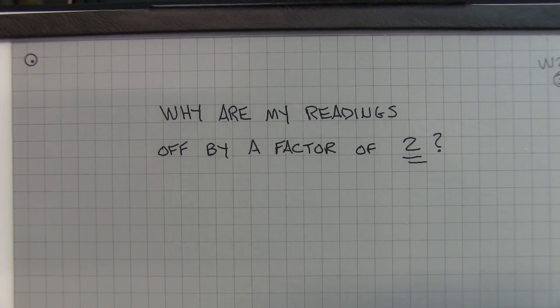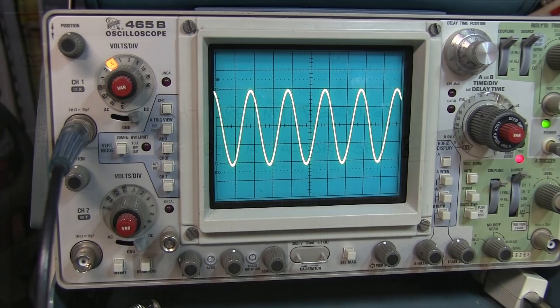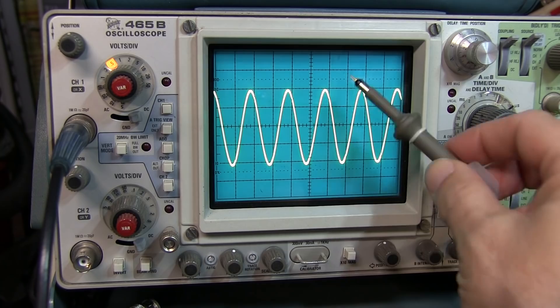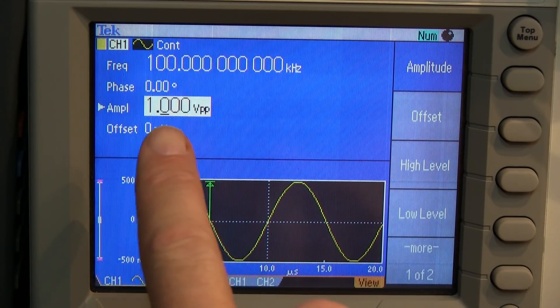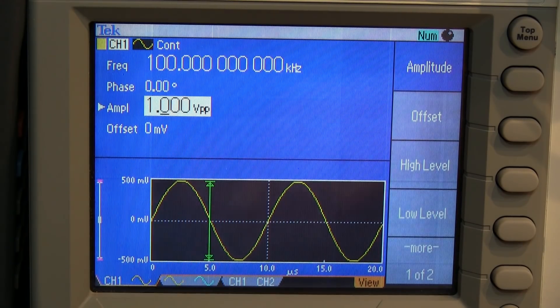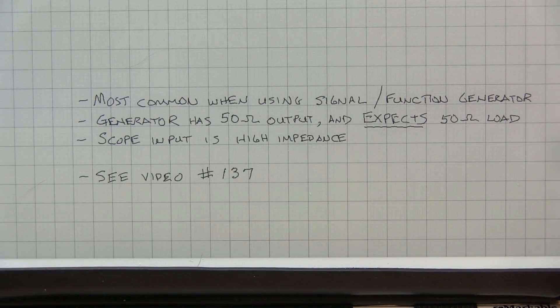Now, why are my readings off by just a factor of 2? Now, in this case, I'm seeing a 2 volt peak to peak signal on my scope, but I've set my brand new signal generator to 1 volt peak to peak. Why the factor of 2 difference? Now, this happens most often when connecting a signal or function generator right to the input of a scope.